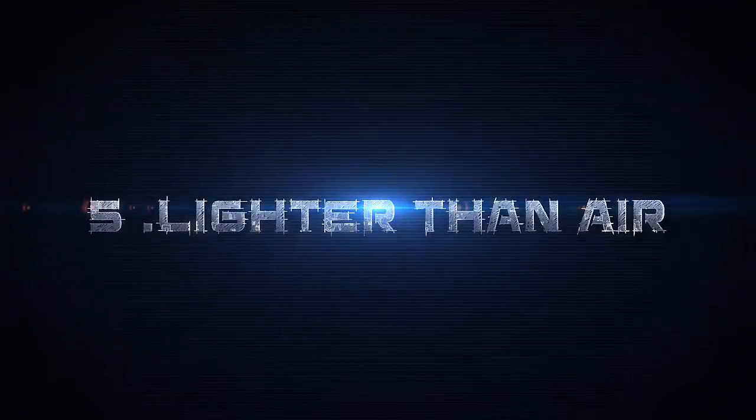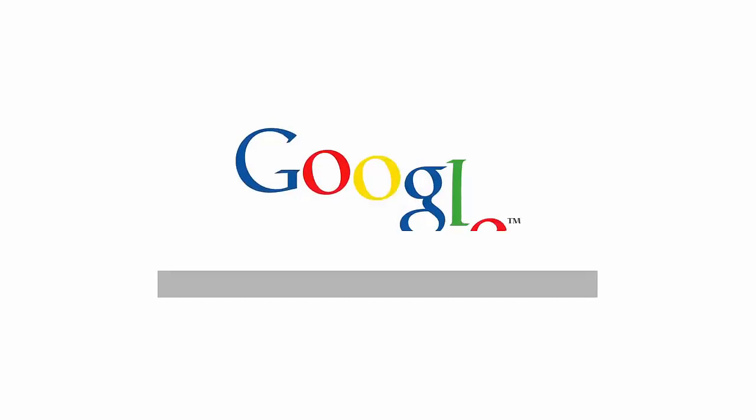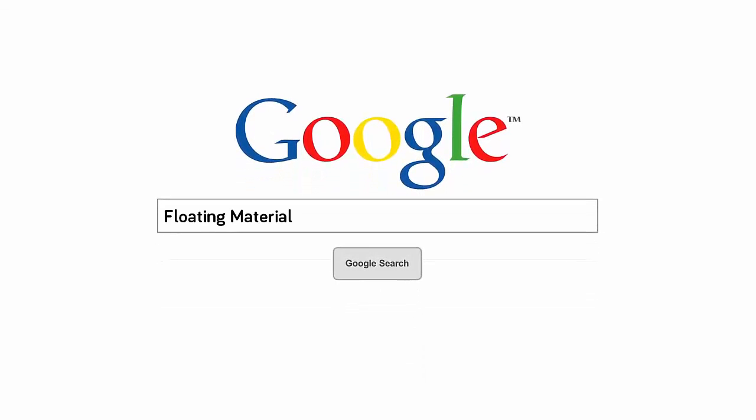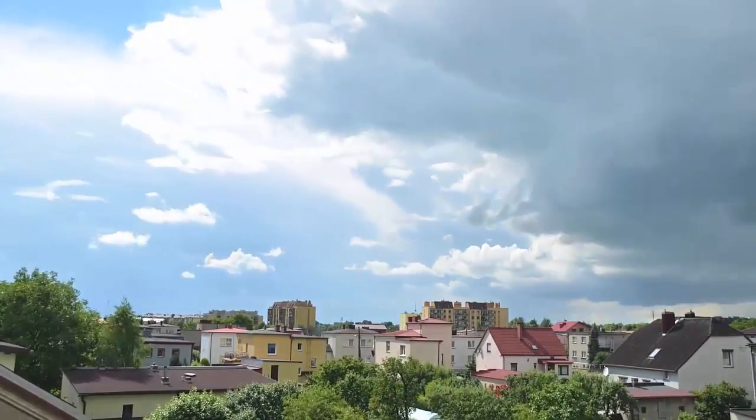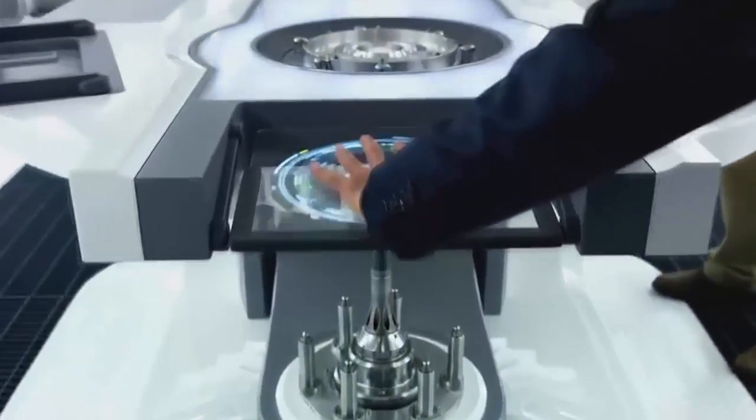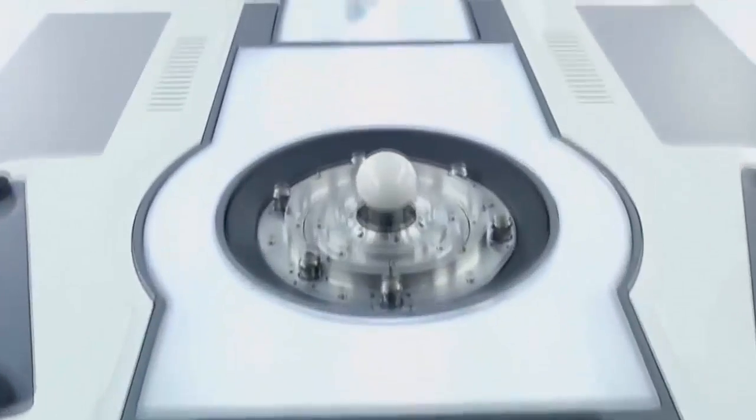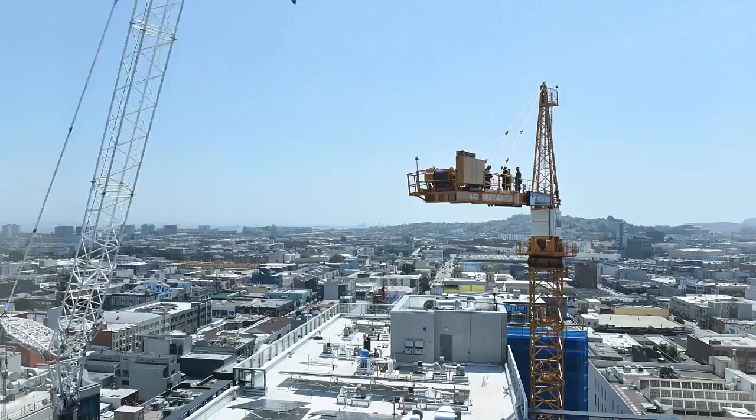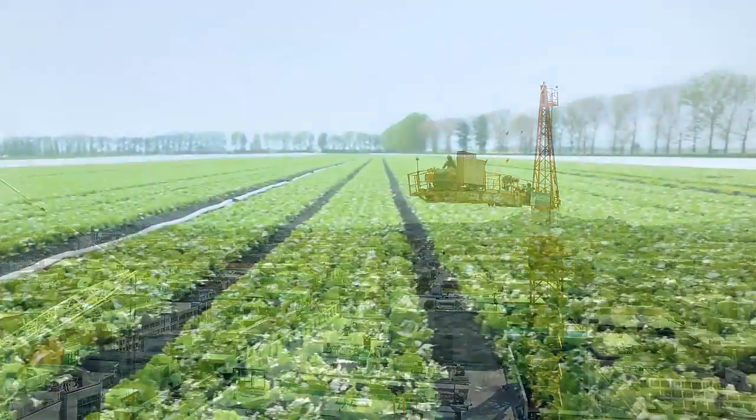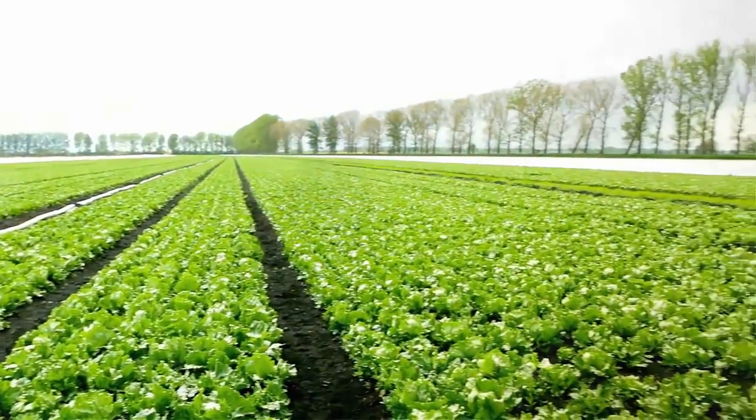Number five, lighter than air. Google has developed a secretive lighter than air material that it promises will change how we interact with the sky. The head of the company's X Labs research team claims that the new super strong material wants to float and will have major implications in both construction and transportation.